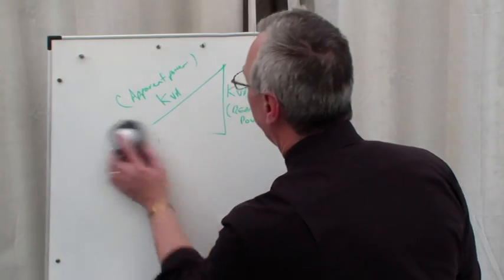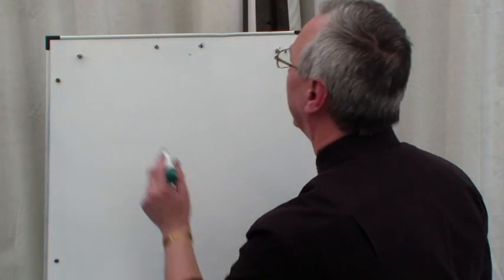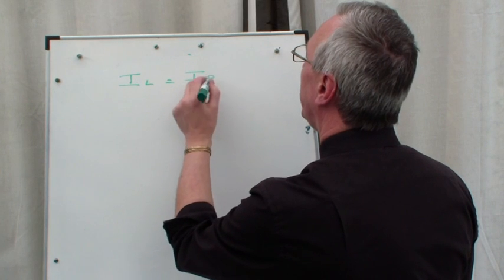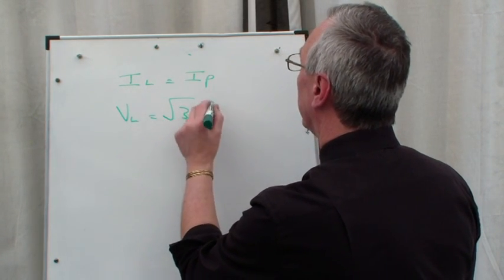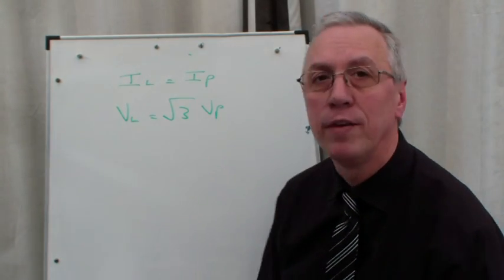I will just finish off very quickly for the lads that are looking at the star delta equation. IL = IP and VL = √3 × VP. There's a formula. A lot of the time you might have to find VP.